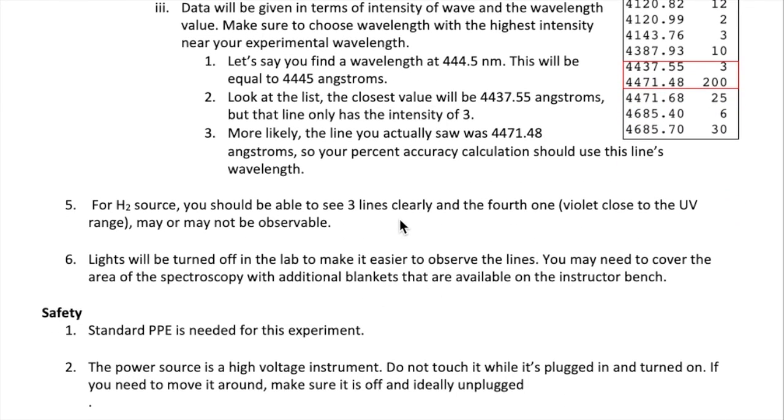For the hydrogen source, you should be able to see three lines clearly. The fourth line, which is located in the violet region near ultraviolet, will be hard to see. All the lights in the room will be turned off to help see the lines clearly, but you may still need to cover your experimental area with blankets provided by your instructor to make the area even darker.